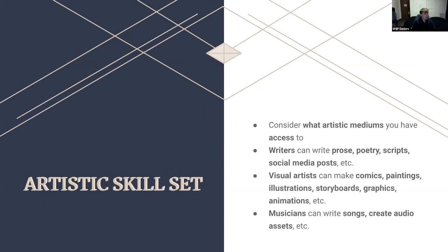We must consider what artistic skill sets we have access to. Whether working with a team or on our own, there's a limited number of skill sets available, and each one means we can only create in certain mediums. Writers can write scripts, poetry, and prose. Visual artists can make illustrations and storyboards. Musicians can write songs and create audio assets. The question to ask yourself as an independent creator is what artistic skill sets you or your team have access to and what you can make with that. The more variation you can include while considering that, the better.